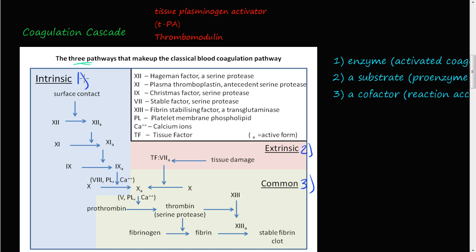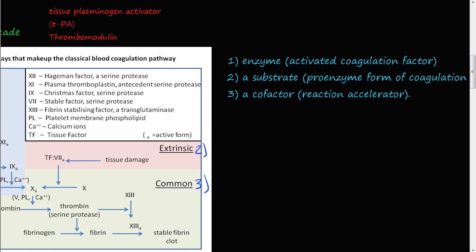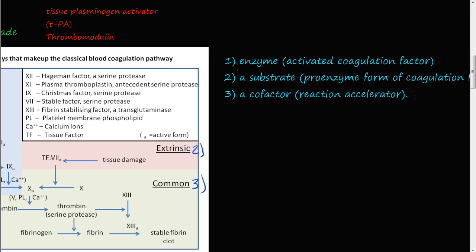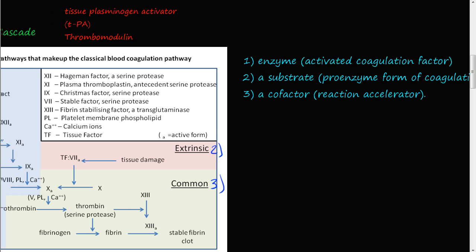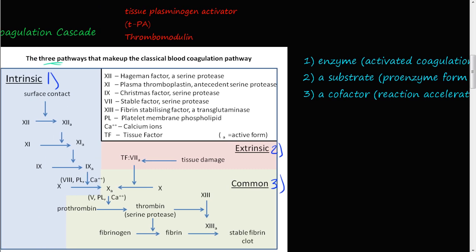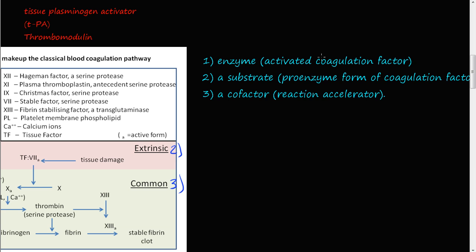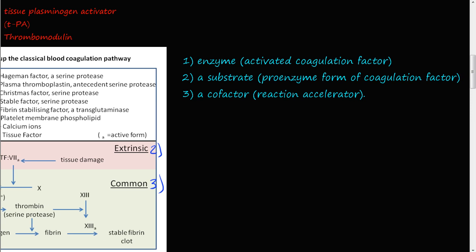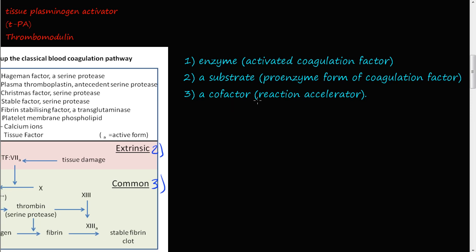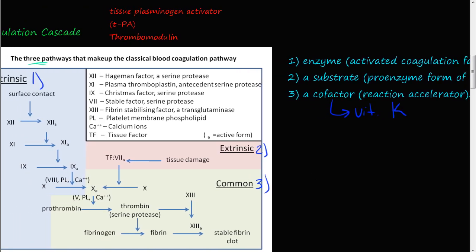There are three main things to remember when talking about the coagulation cascade, as we've seen in all these steps. In every step there's an enzyme — an activated coagulation factor. There's a substrate, a proenzyme form of a coagulation factor that's going to be converted. And there's a cofactor, something that causes the reaction to accelerate. An example is vitamin K — vitamin K is a cofactor.